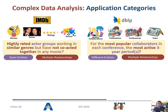For the second category, we present a DBLP scenario. Here, for the most popular collaborators in each conference, we want to find out the most active three-year periods. The focus is on analyzing the different types of entities like collaborators, conferences, etc.